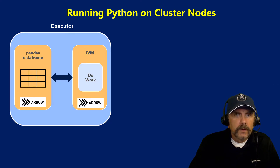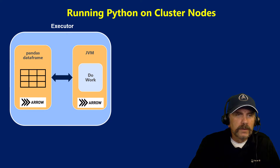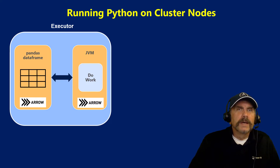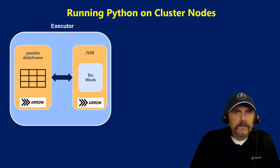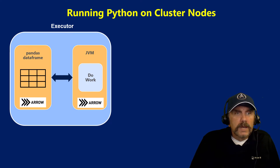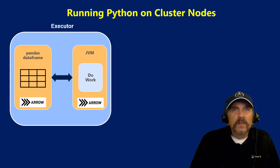We see the executor as before, we see the JVM, but notice you don't see any serializing or deserializing. You can also notice the little arrow icon beneath the pandas data frame and the JVM. What that's actually signifying is that Arrow is a format which is being substituted in place of a pandas data frame. It's also being substituted in place of the JVM storage format for in-memory. So now, instead of having to serialize and deserialize, they're using a common format. Since they're using a common format, it's like all in the family.